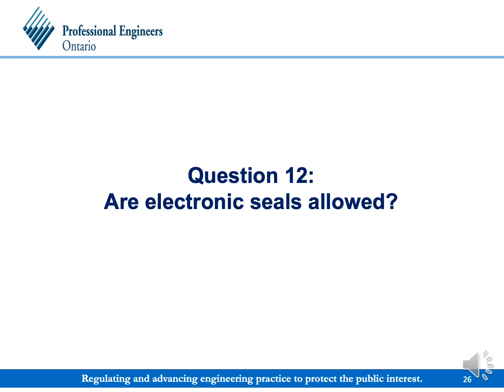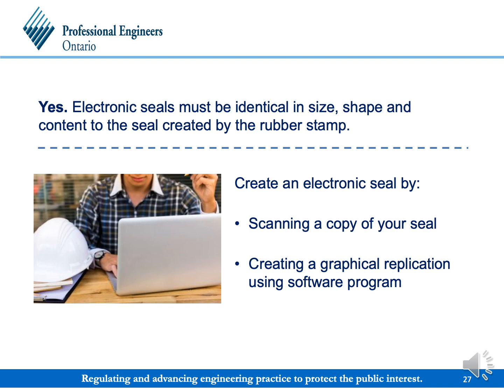Now we will discuss electronic seals and their requirements. Yes, Professional Engineers Ontario allows engineers to use electronic seals. Electronic seals must be identical in size, shape, and content to the seal created by the rubber stamp. You can create your electronic seal by scanning a copy of your seal or creating an exact graphical replication using a software program. The engineer must maintain control over the electronic seal and must use an appropriate security method.